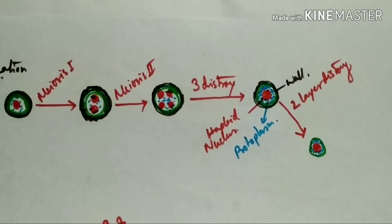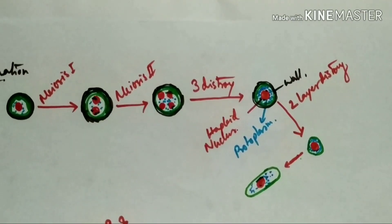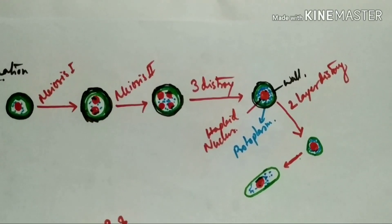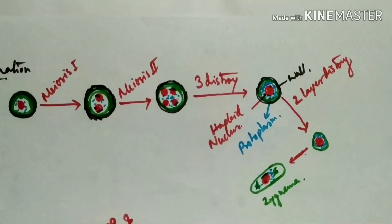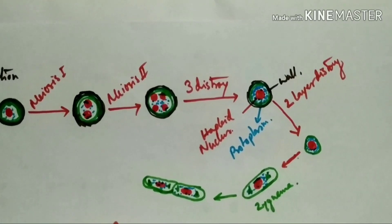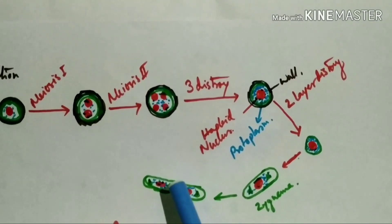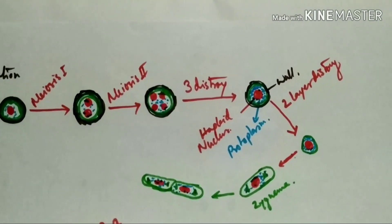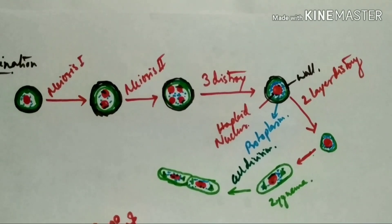Now outer two layers destroy, only inner layer, protoplasm, and haploid nucleus stay, and from which new Zygnema produces. And chloroplast also generates, and by cell division it increases its size and produces a filament.